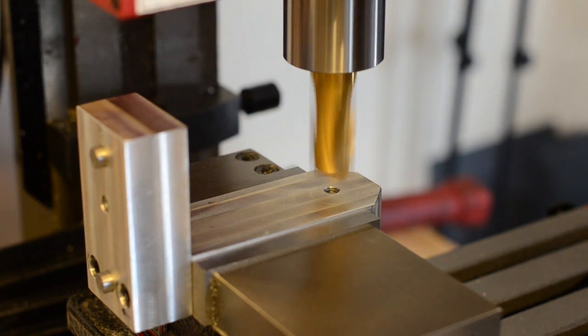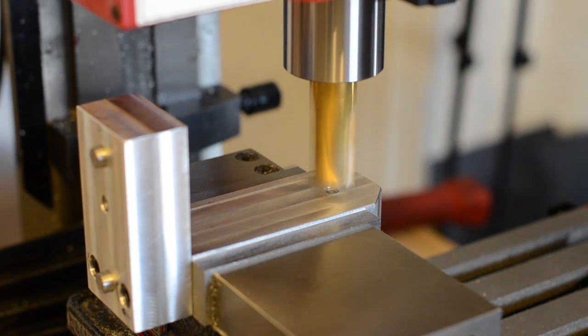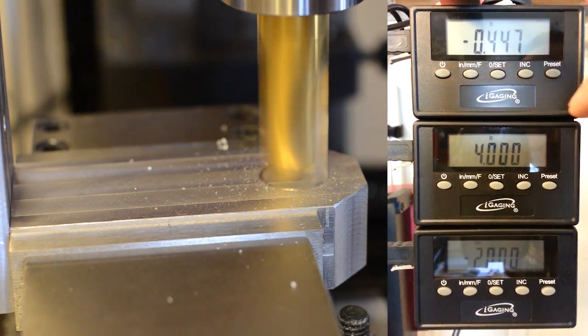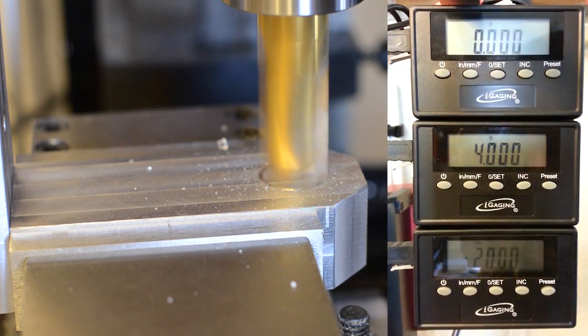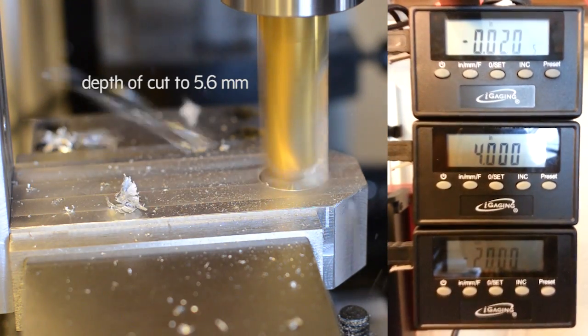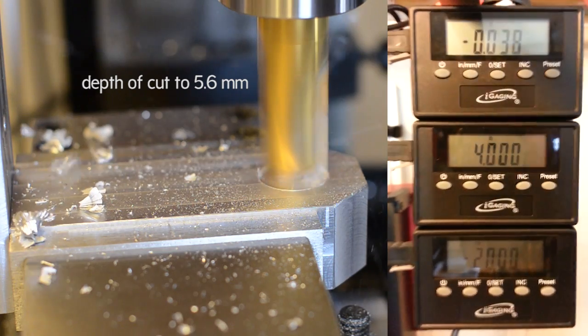Now I'm making a plunge cut on the arms. This is so the key can fit into the hole. And I'm setting the Z-axis to zero. So I wanna make a cut 5.6 millimeters down.